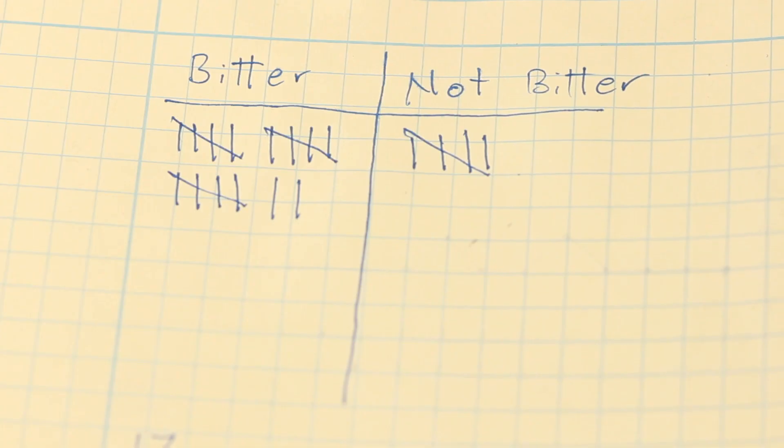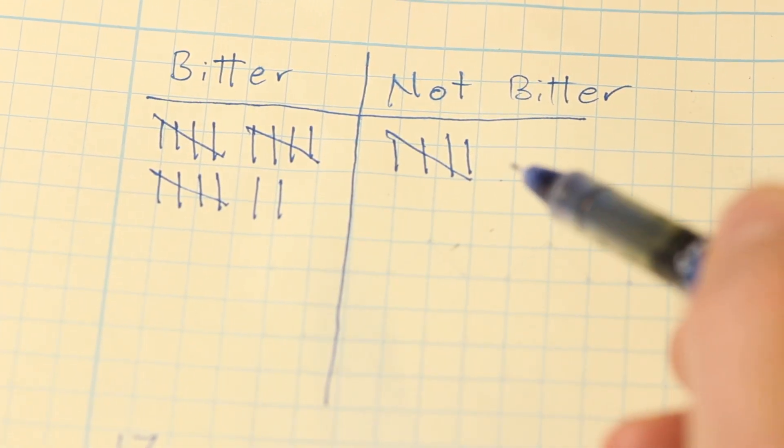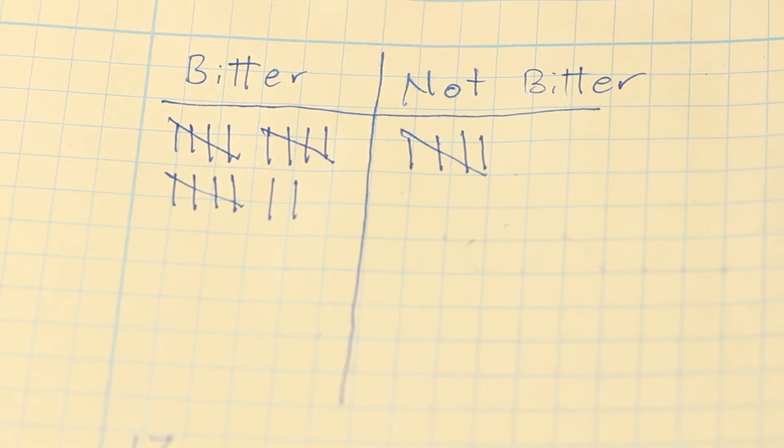Phew, that was a lot of work and took a lot of time to survey everyone. I bet there's a better way for people to enter the data themselves. With our collected data, we can begin to estimate what percentage of the population can taste PTC — but let's perform that experiment again using the micro:bit instead.